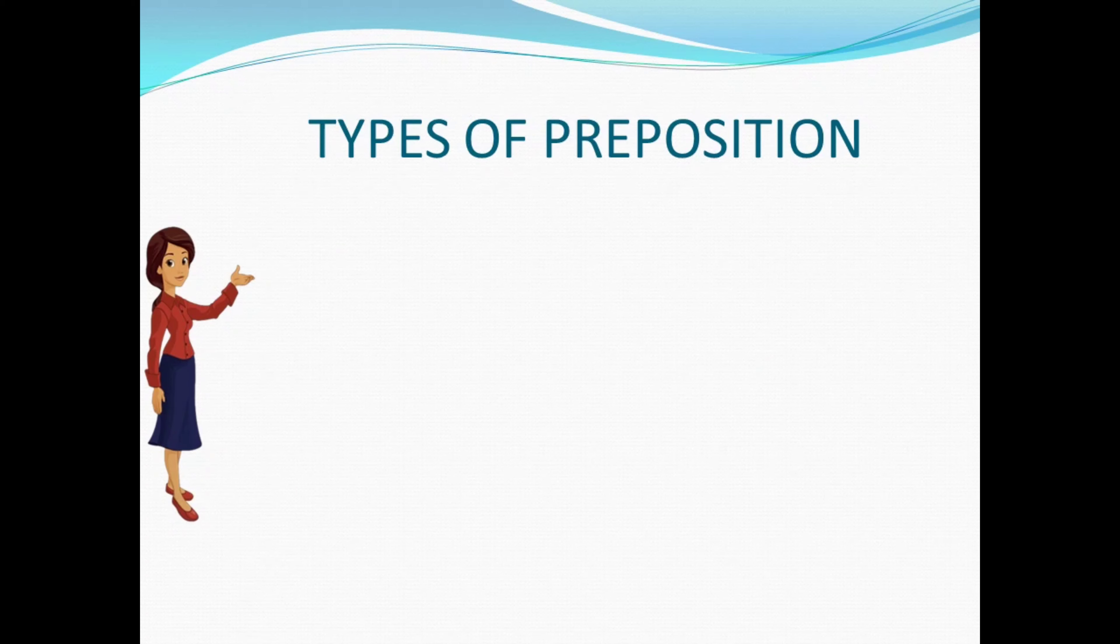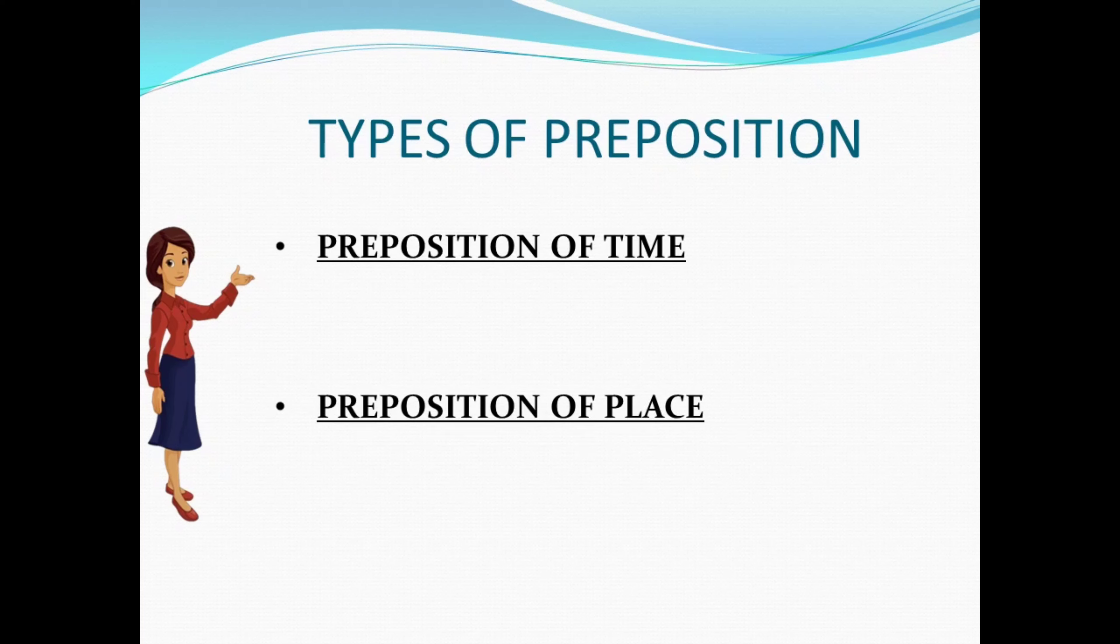So now we come to the types of preposition. The first type is preposition of time, then we have the second one, that is preposition of place, and then the third one, that is preposition of direction or movement.